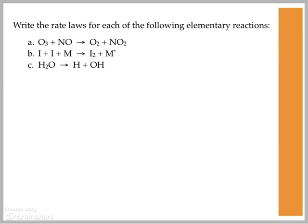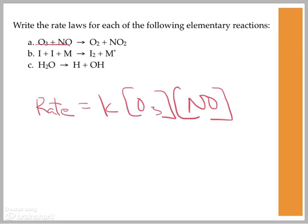In this case, we're dealing with elementary reactions. So we can just do a regular rate law. For example, in the first one, your reactants are O3 and NO. So your rate law is just going to be rate equals k times the concentration of O3 and the concentration of NO.